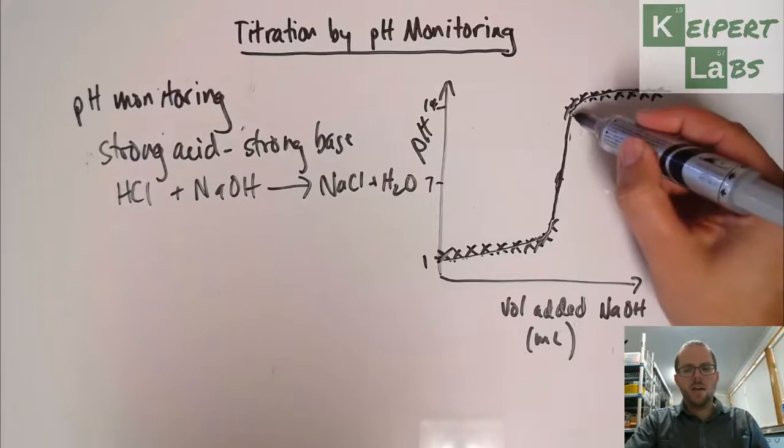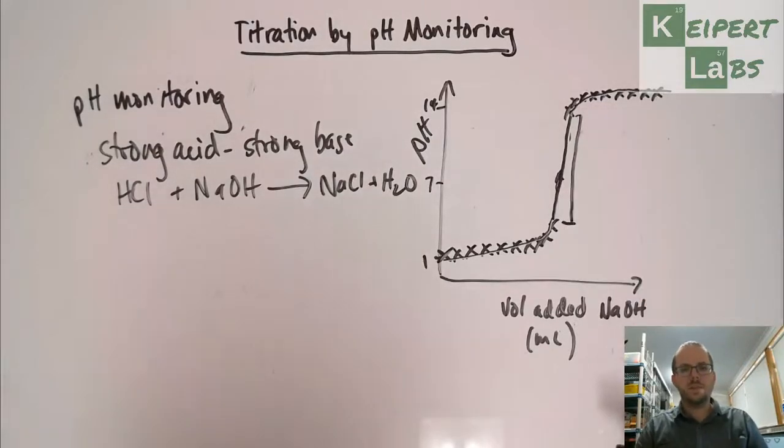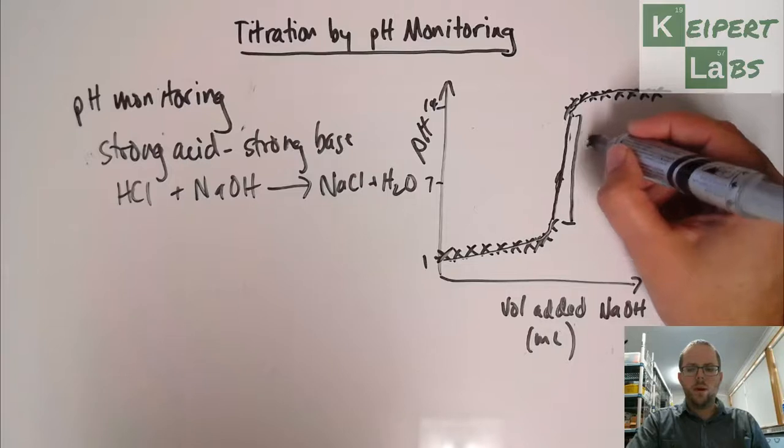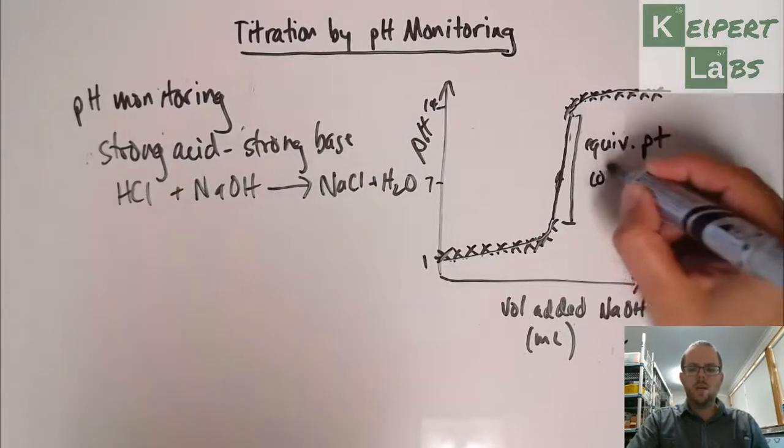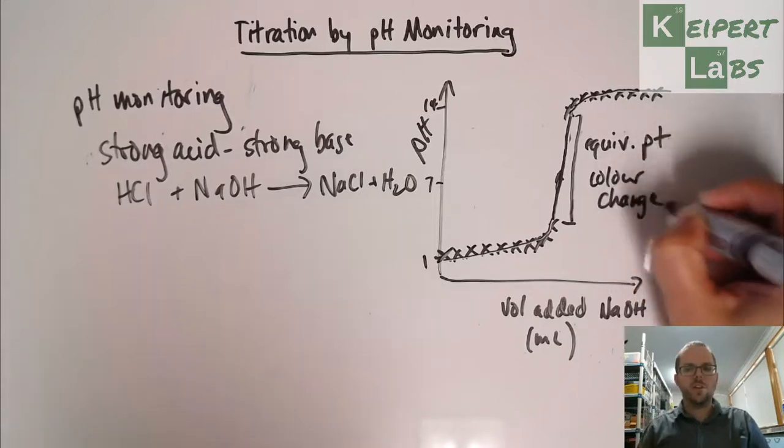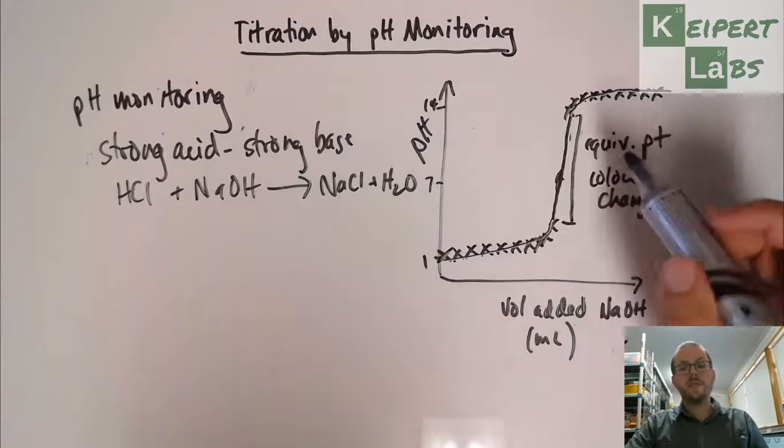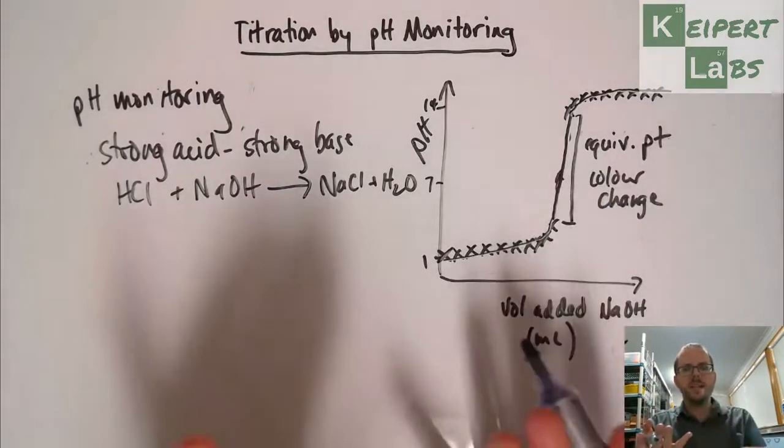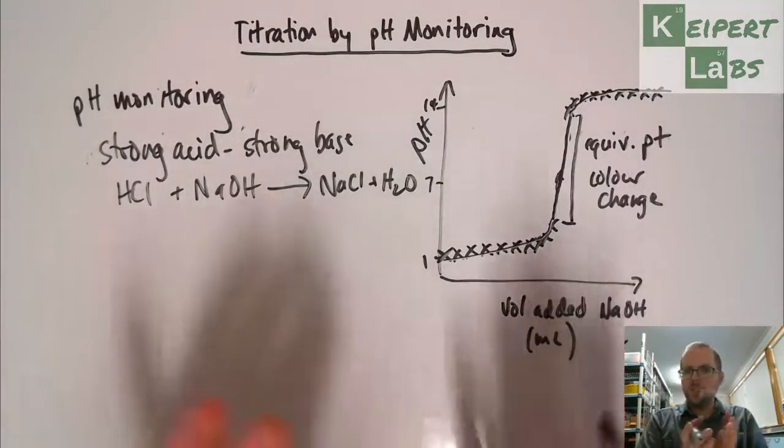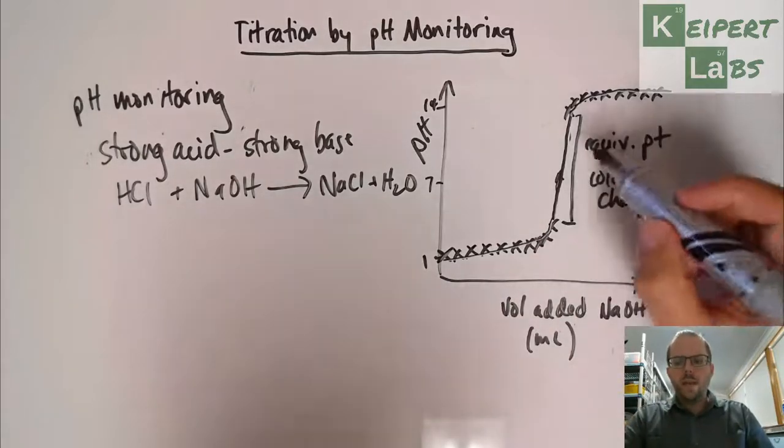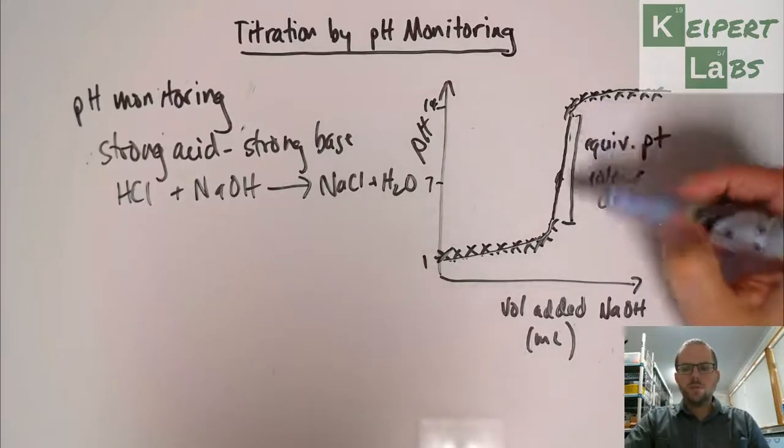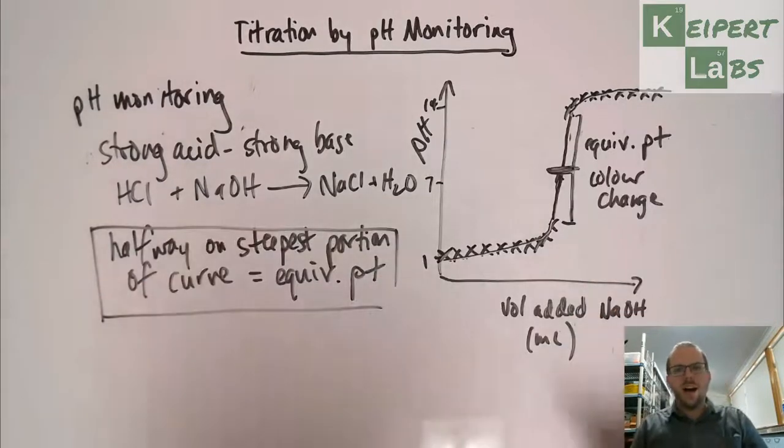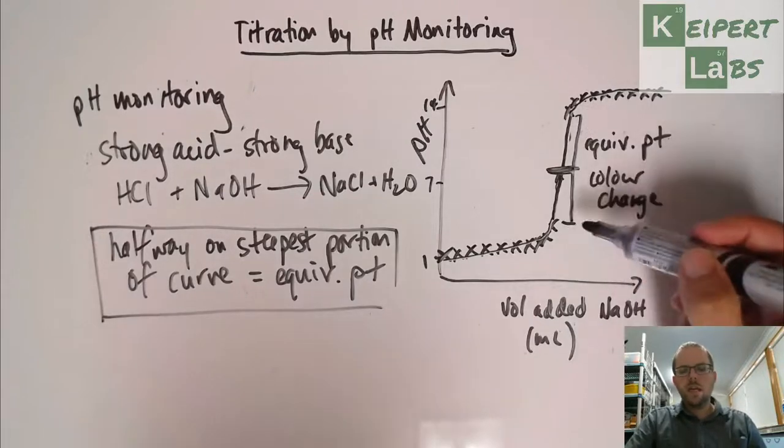Because at this point, we now have a basic solution and the more base that we add, it does make it more basic, but it only makes a relatively small change in the pH by that point. What we're particularly interested in is this section here, this really steep section of the curve. This is around where our equivalence point will be and it will also be where, if we were to use an indicator, our colour change should occur. If it doesn't occur at this point, then we've made a poor choice. But the idea being that this is where the balance, the tipping point between acidic solution and basic solution, as we just pass that equivalence point.